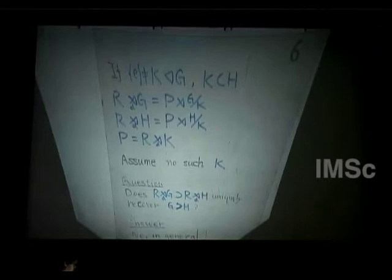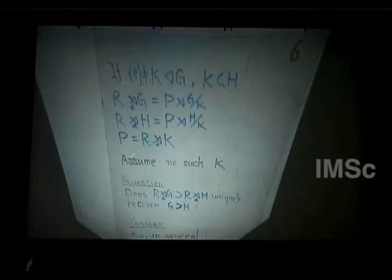One more observation: if there is a non-trivial normal subgroup K of G contained in H, then the group-subgroup subfactor forgets the information of K — it only carries the information of G/K and H/K. So I make the assumption throughout that no such K exists. Under this assumption, the natural question is: does the group-subgroup subfactor uniquely recover the original pair? That's a very natural question, and the answer is somewhat surprising — it is no.